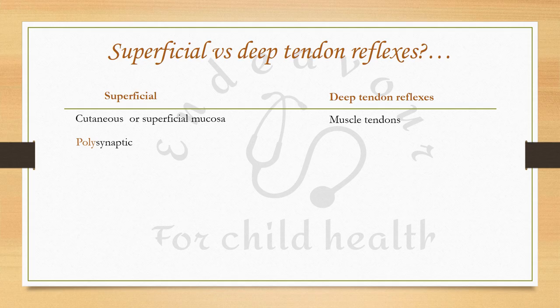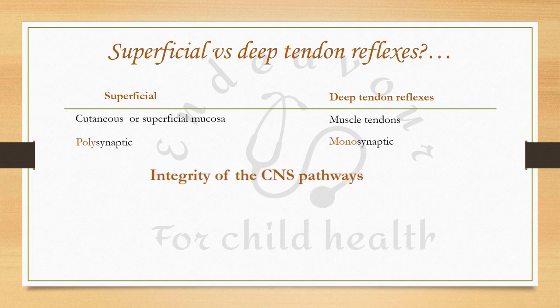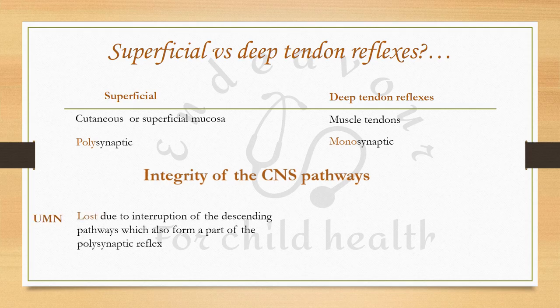The superficial reflexes are polysynaptic: the sensory signal must first reach the spinal cord, then ascend to the brain, then travel back to the spinal cord to reach the motor neurons. On the other hand, the deep tendon reflexes are monosynaptic. It is important to remember that while both these reflexes check for the integrity of CNS pathways, the superficial reflexes are lost in upper motor neuron lesions because of interruption of the descending pathways, which also form part of the polysynaptic reflex.